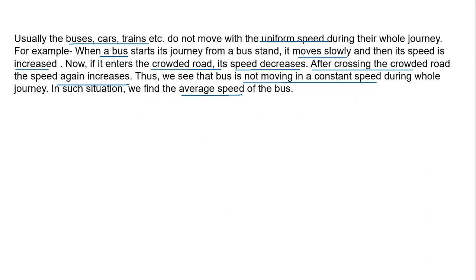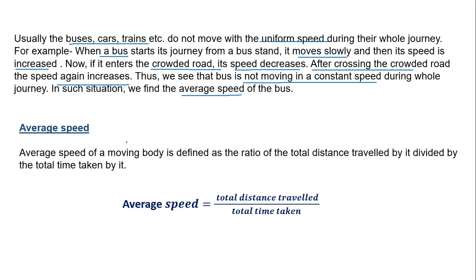In such situations we use another term, average speed. Average speed is defined as the ratio of the total distance traveled divided by the total time taken, expressed as: average speed equals total distance traveled divided by total time taken.